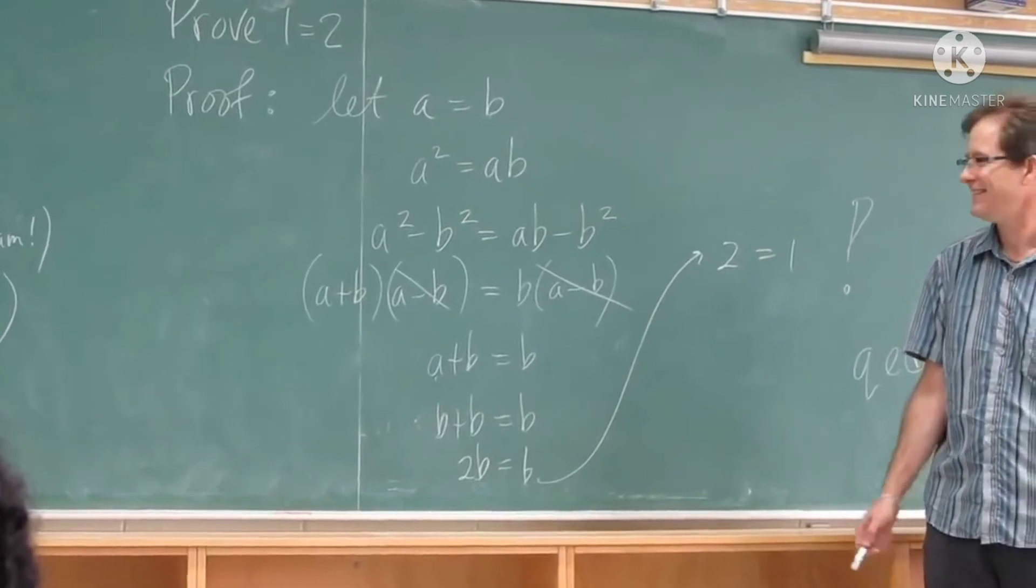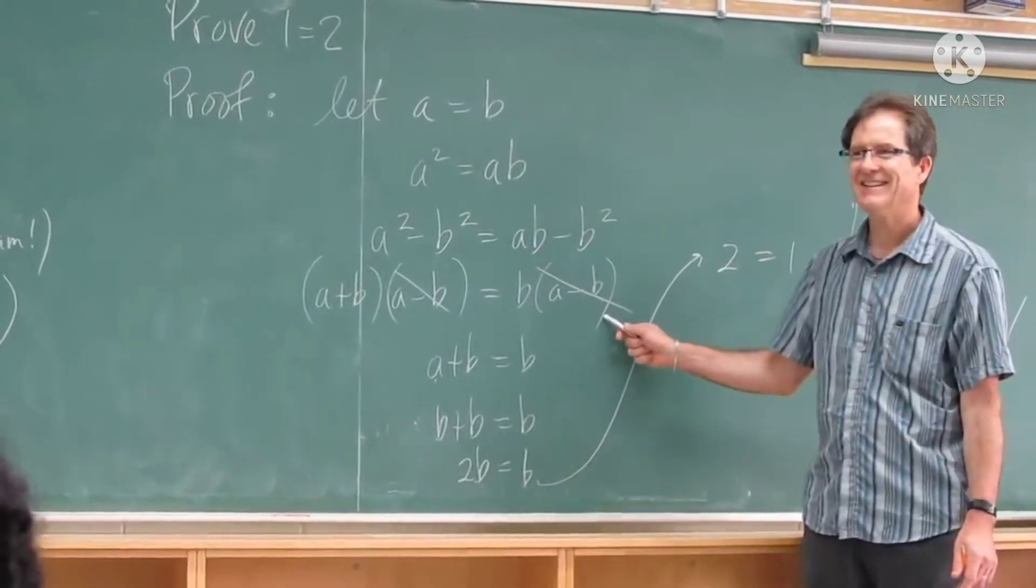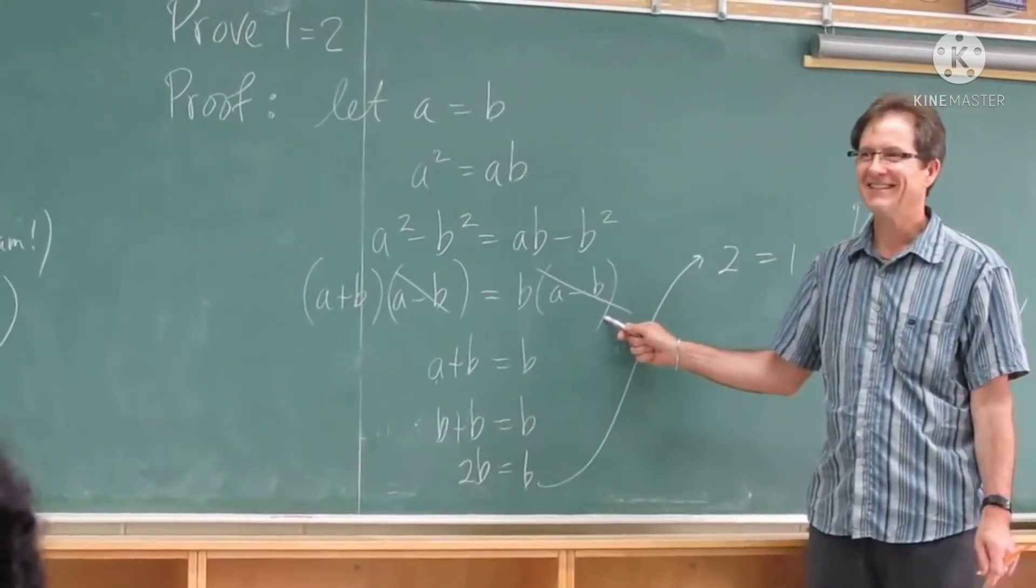Because if you cancel a minus b, you have to make sure a minus b is not 0. But you said a equals b, so a minus b is 0.